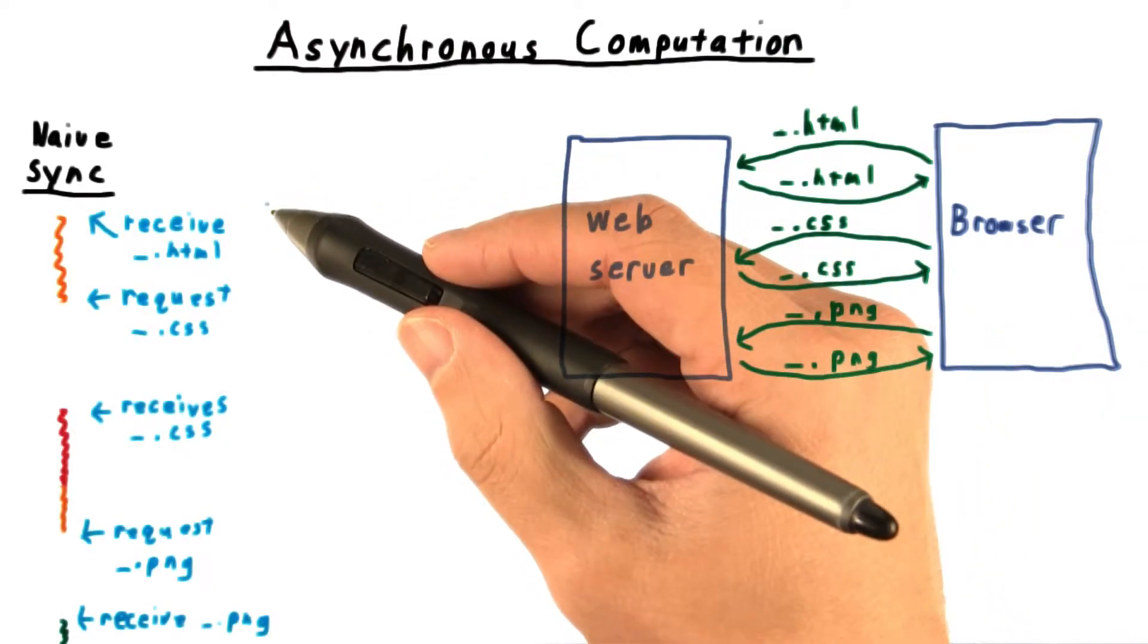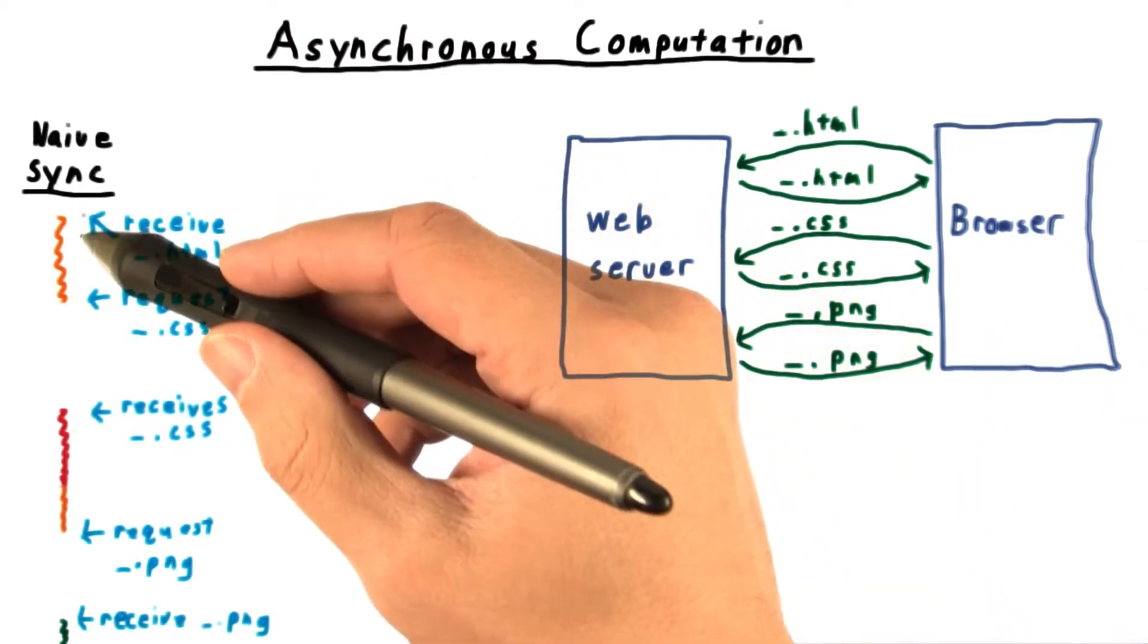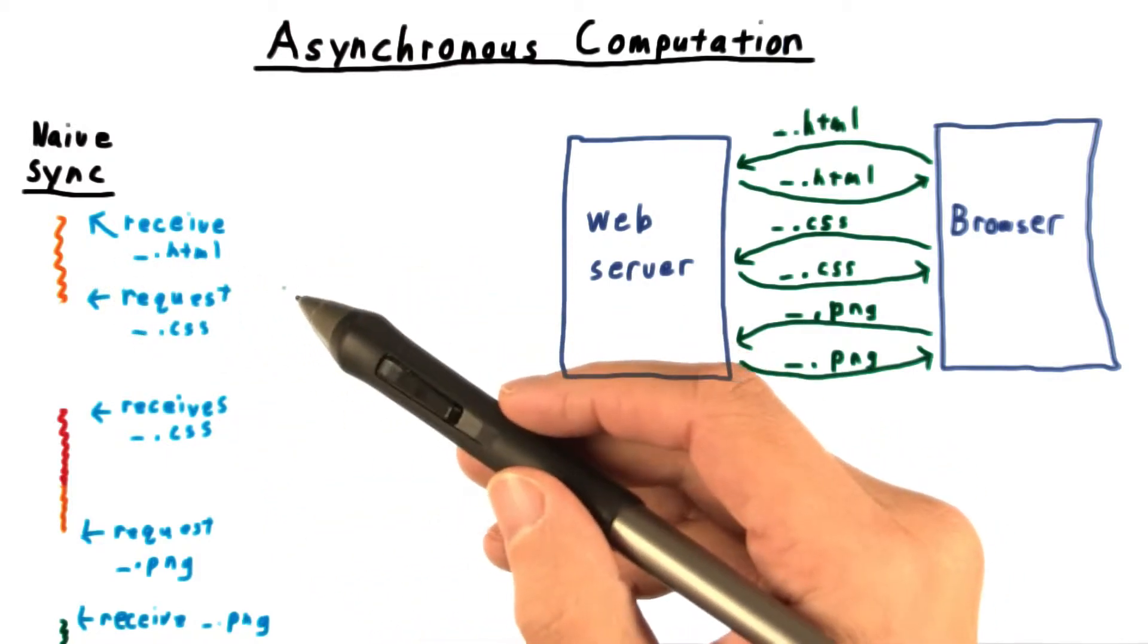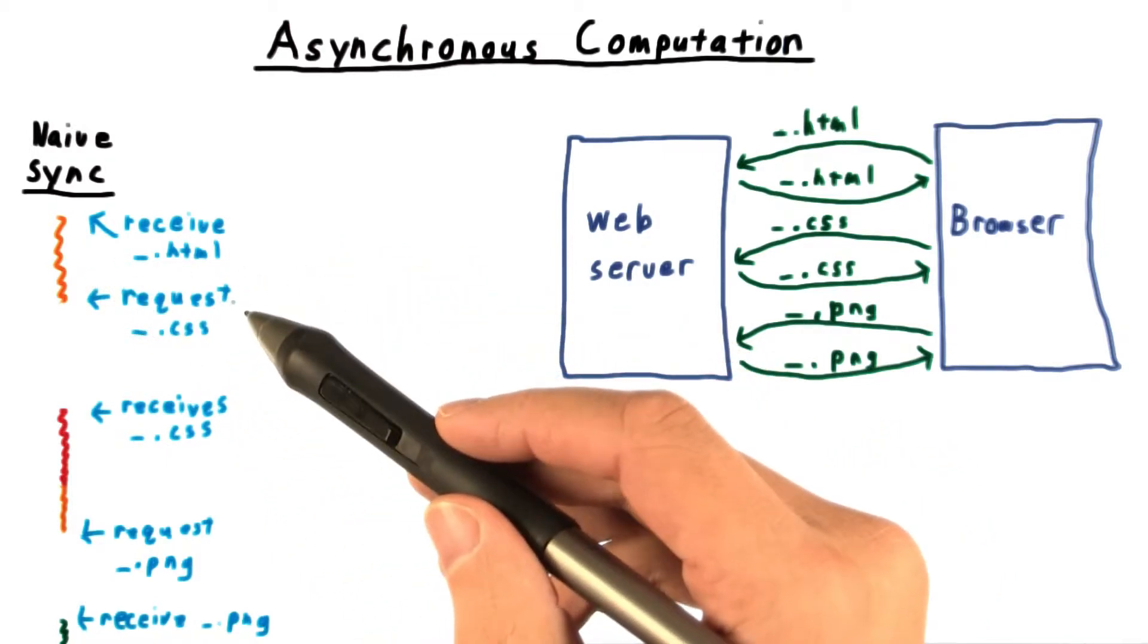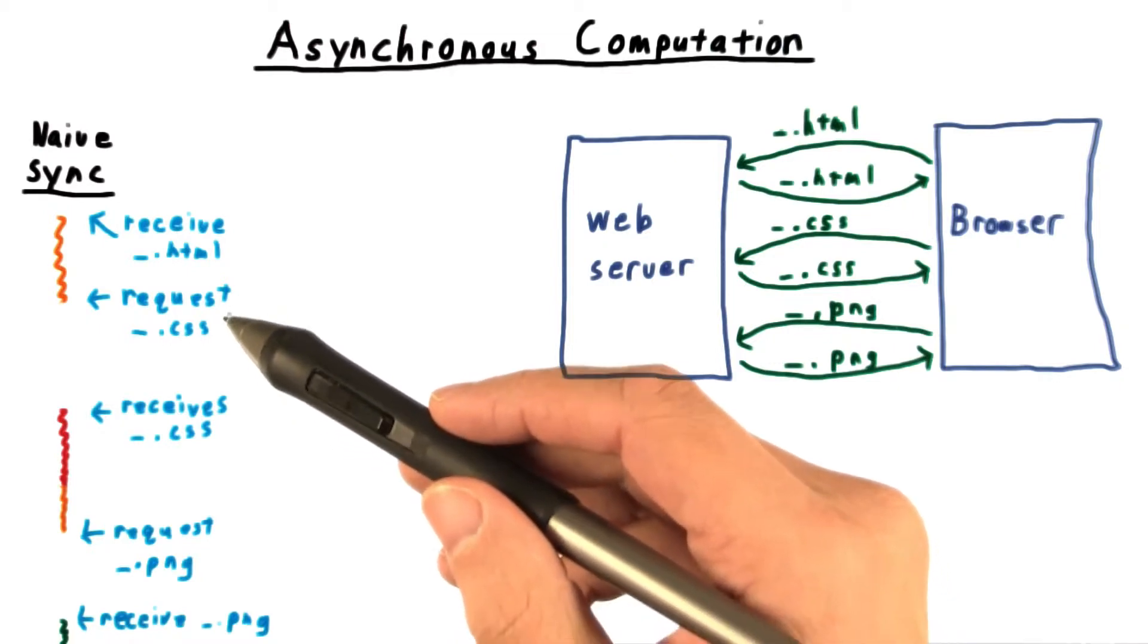Now, if we were to implement this in a naive synchronous way, our program might run for a while. But then when it discovers that it needs a CSS file from the server, it would make the HTTP request and then pause while it waited to get the response back.